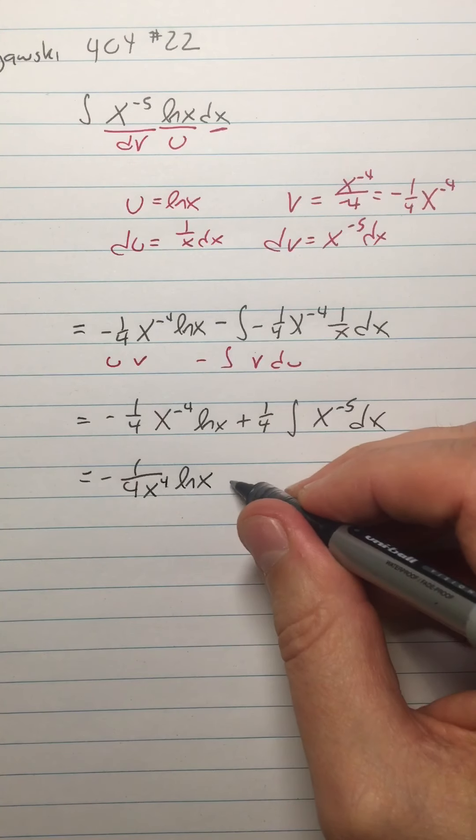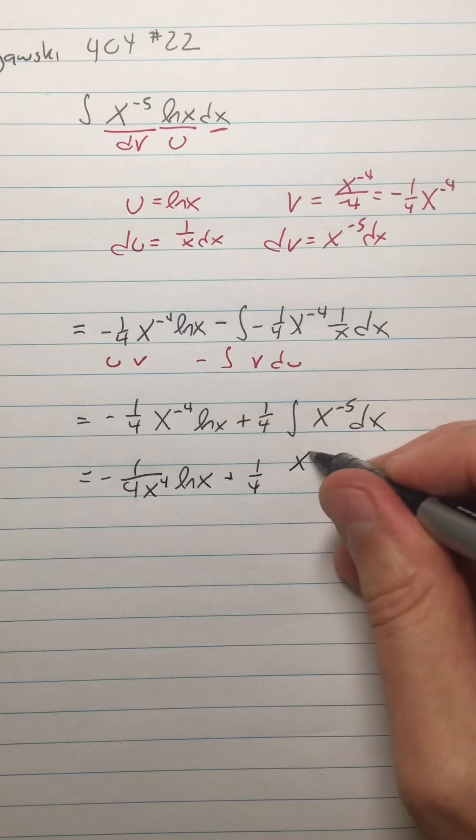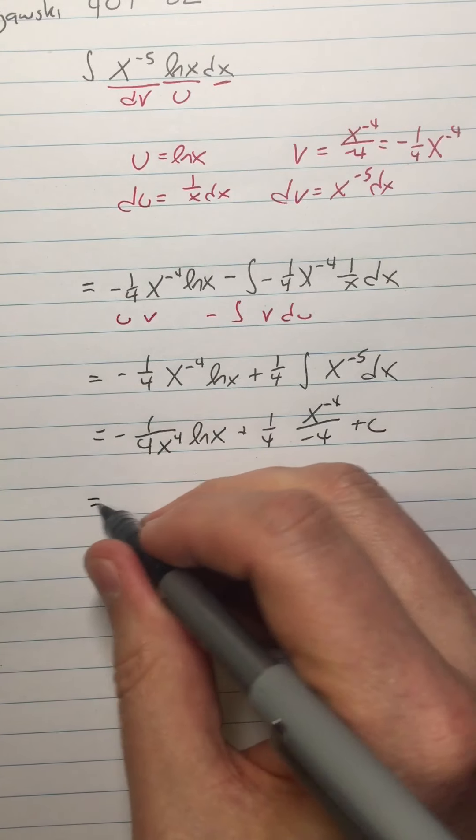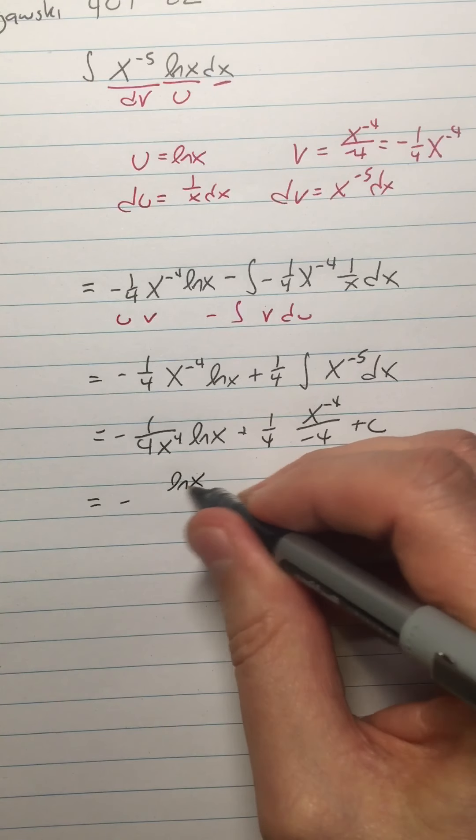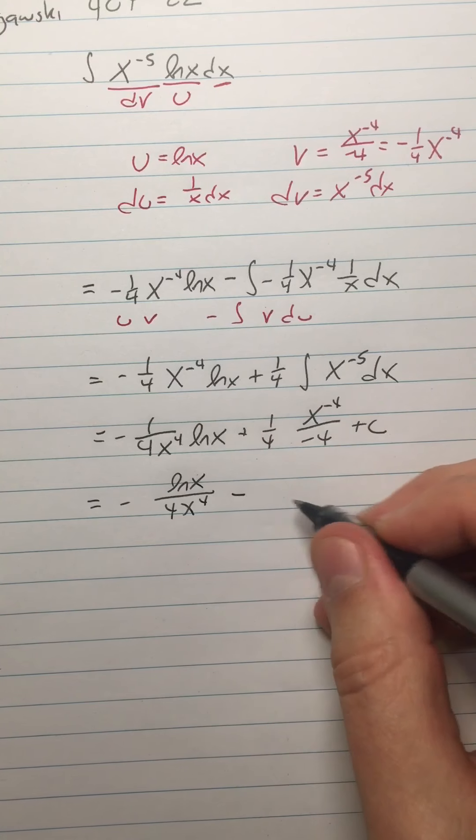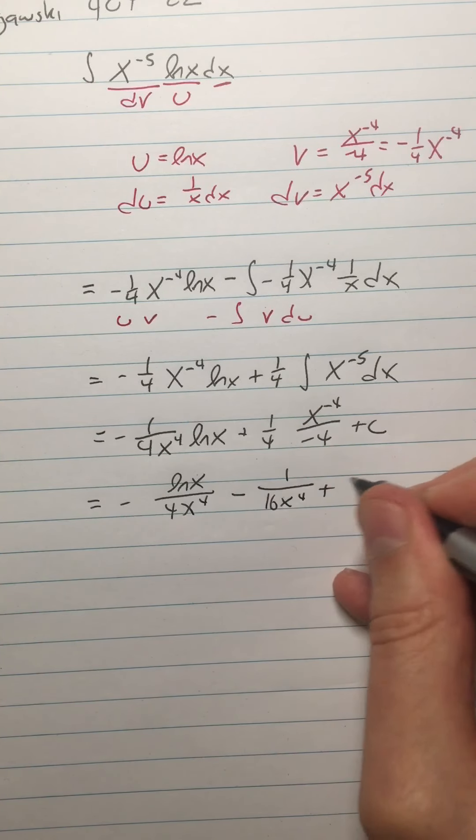All right, and then that's easy to integrate. So it's negative one. Let's put this negative one over four x to the fourth ln x went out. This is a little cleaner. Plus one fourth. So I'm going to raise that one. So I have x to the negative fourth over negative four. Put my plus c. Let's just clean it up a little. Maybe negative ln x over four x fourth. That'd be nice. Minus one over 16 x to the fourth plus c.